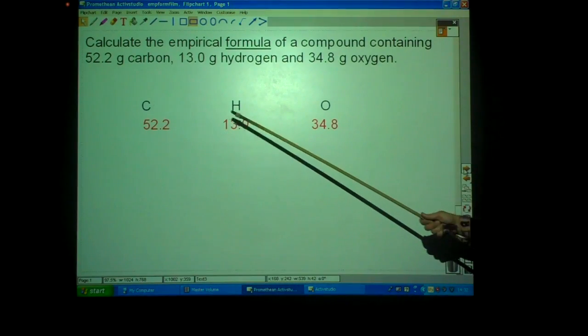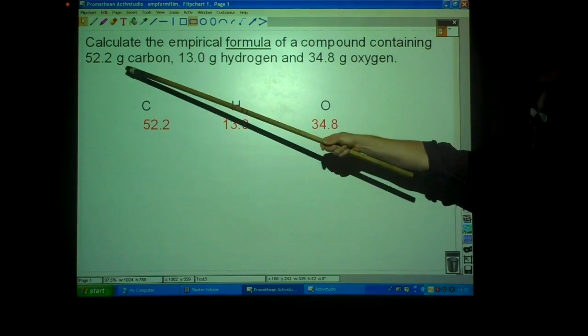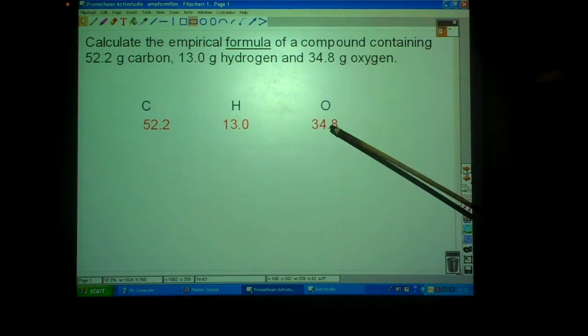So, carbon, hydrogen, oxygen. You write the symbols of the elements at the top and underneath them you write the mass in grams from the question.